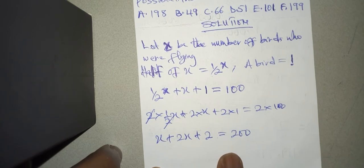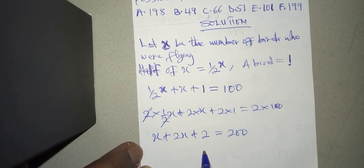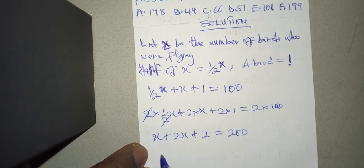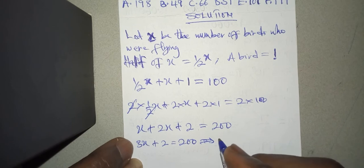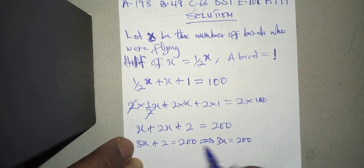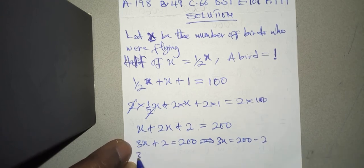All right, so we are going to simplify now. This is x plus 2x, we get 3x plus 2 equals 200. All right, so I'm going to group like terms. Now we have 3x equals 200, this one goes there to be negative minus 2, and we have 3x equals, what do we get? 200 minus 2 gets 198, so 198 here.